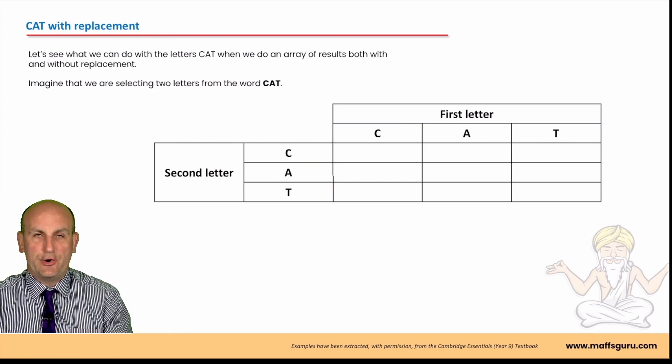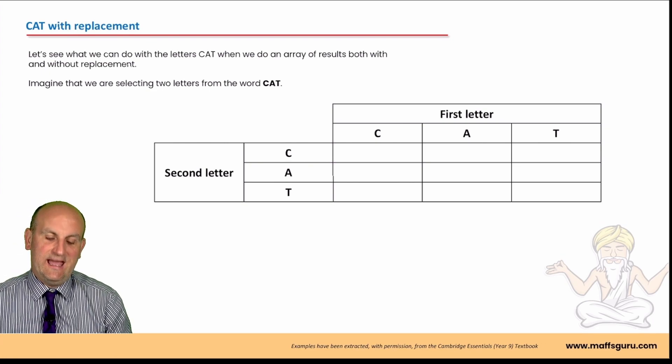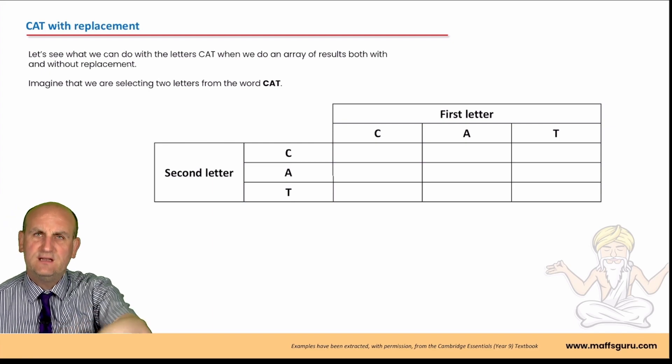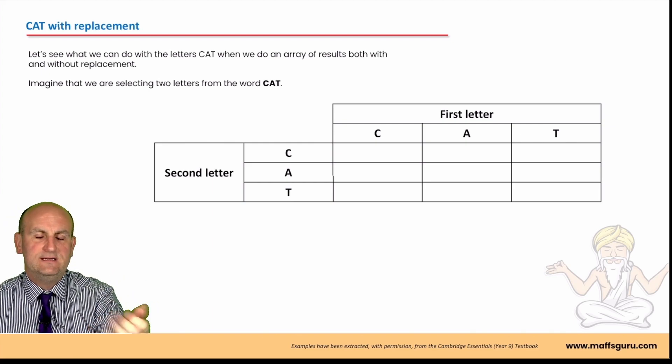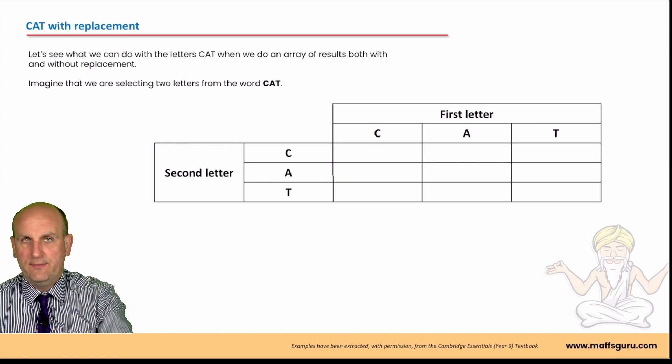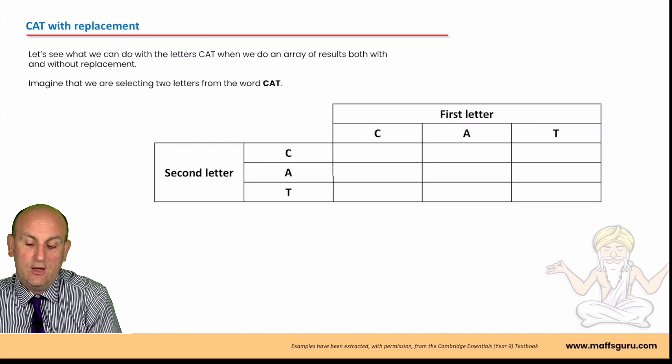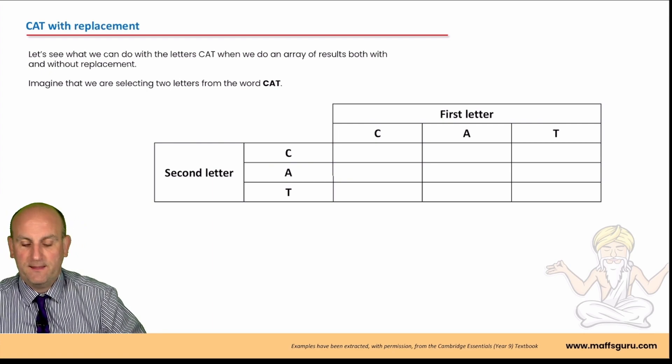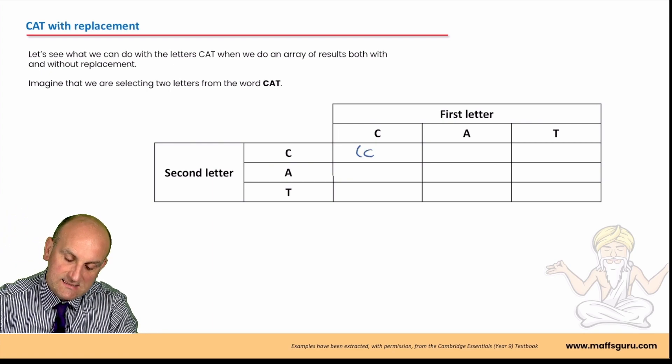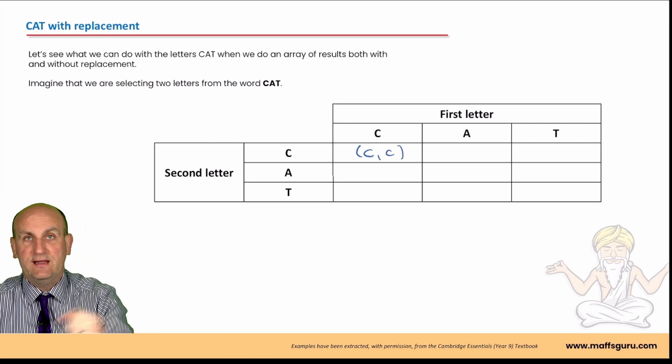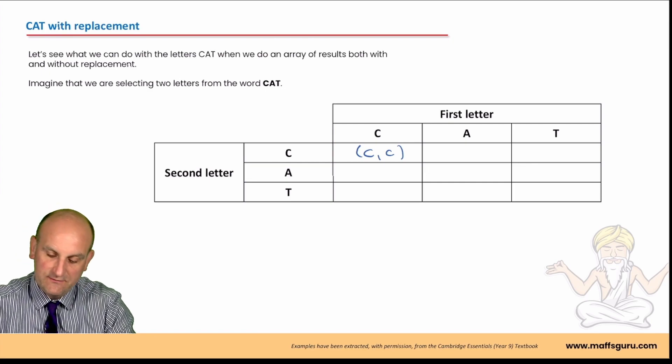But, what we're going to deal with it at the moment is this array idea. So, I've got the cap. I've got the letters of the word cap. I've put them in a bag and they're going to take out a letter. I'm going to look at it, write it down, put that back in and then try again. Now, because I'm putting it back in, it means all of those letters are in play for both letters.